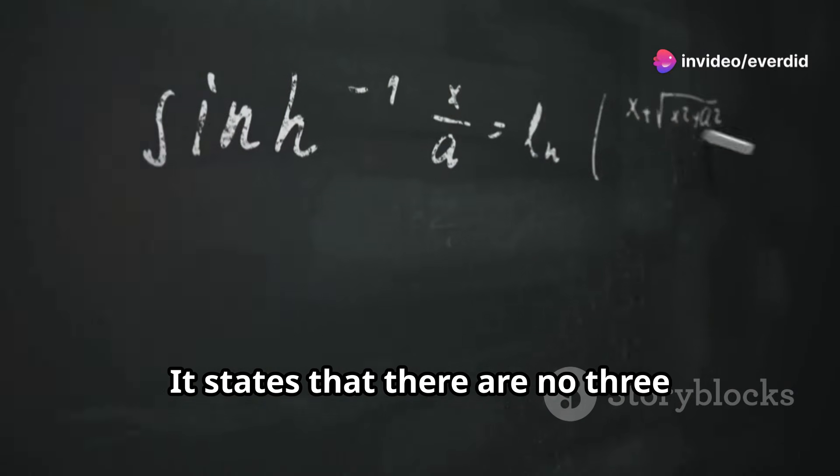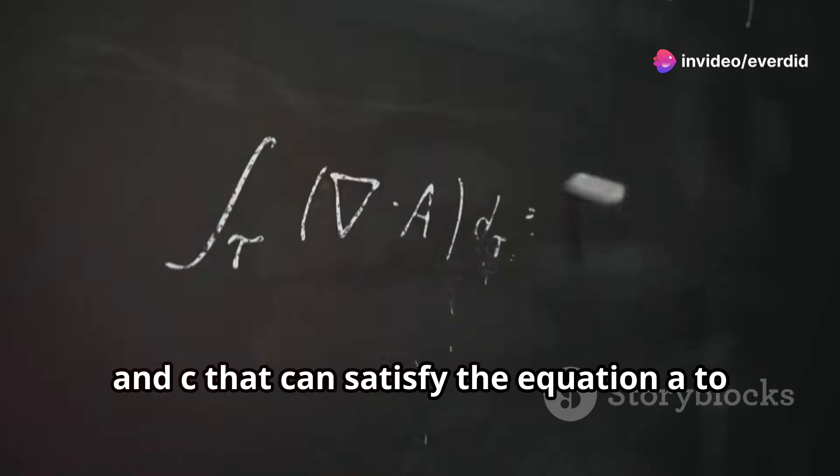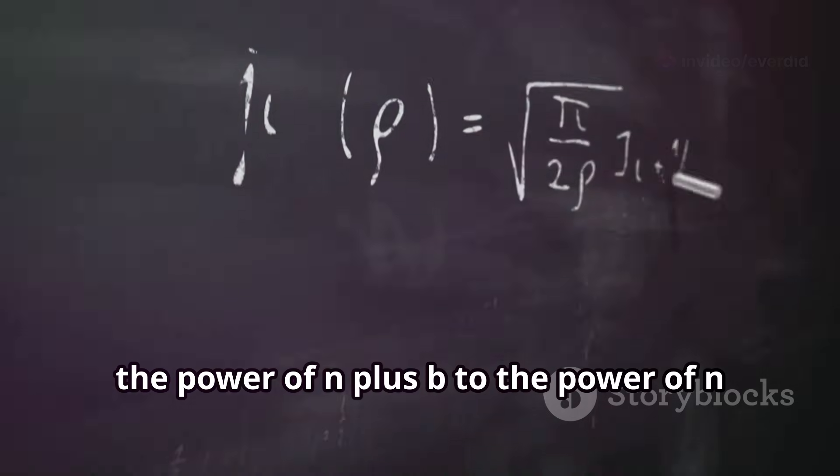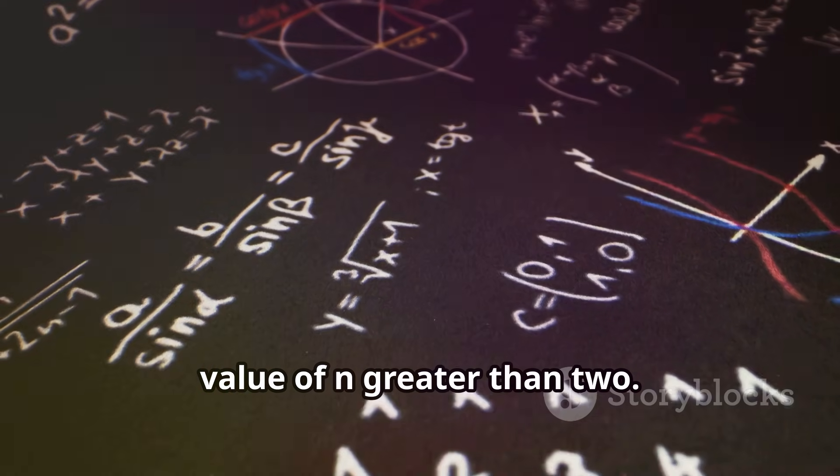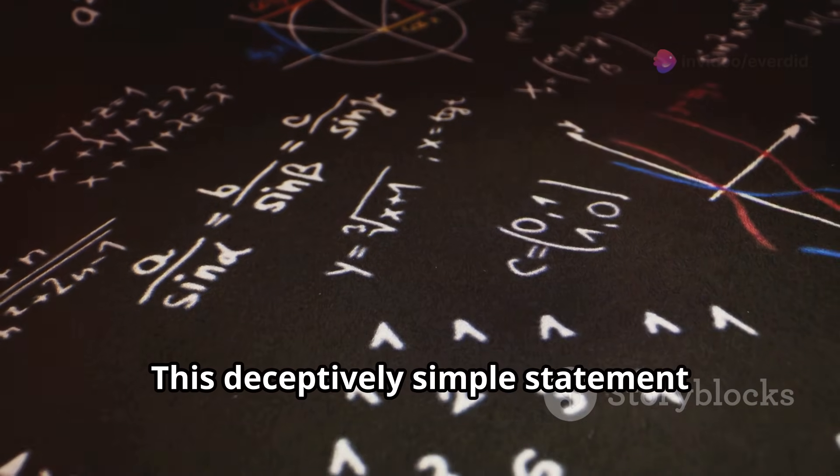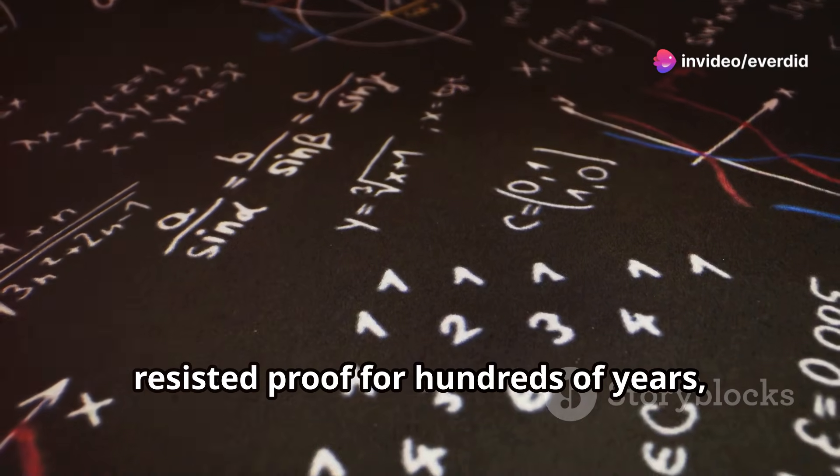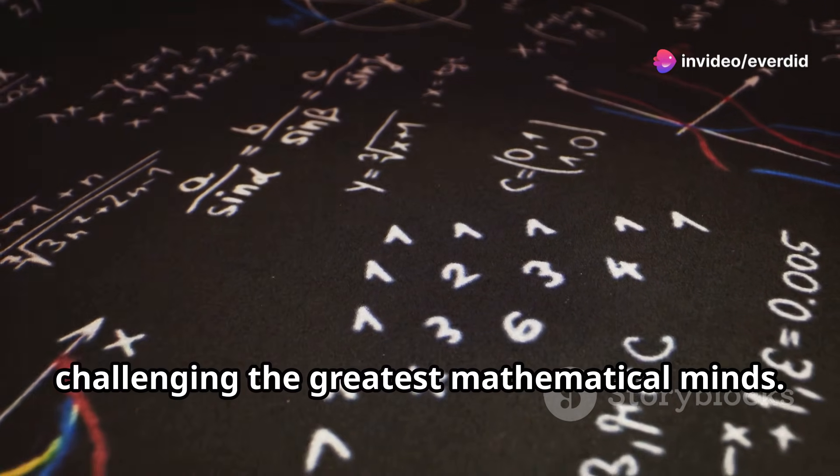It states that there are no three positive integers a, b, and c that can satisfy the equation a to the power of n plus b to the power of n equals c to the power of n for any integer value of n greater than 2. This deceptively simple statement resisted proof for hundreds of years, challenging the greatest mathematical minds.